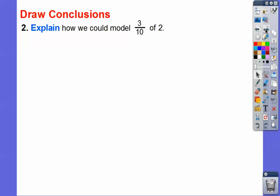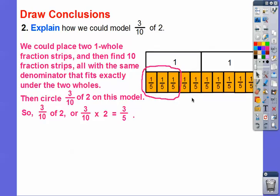How could we model three-tenths of two? Remember, two is two whole fraction strips. Then we find ten fraction strips — because the denominator is ten — that fit exactly underneath the two. We can find ten of the one-fifths underneath this two, then circle three of them to show three-tenths.